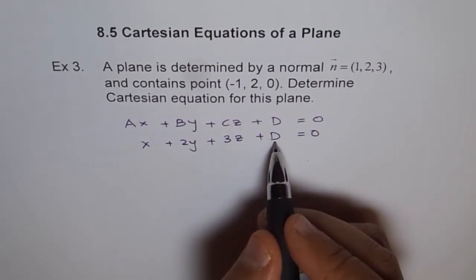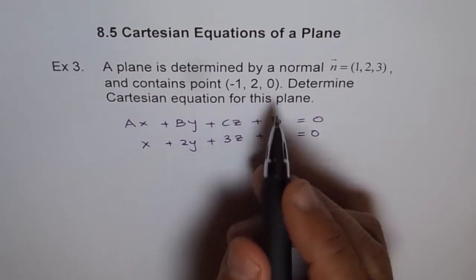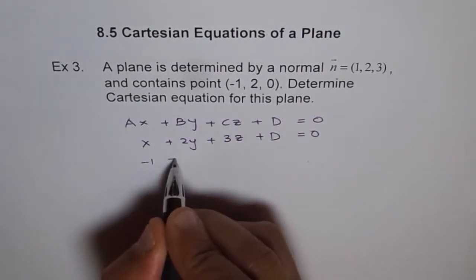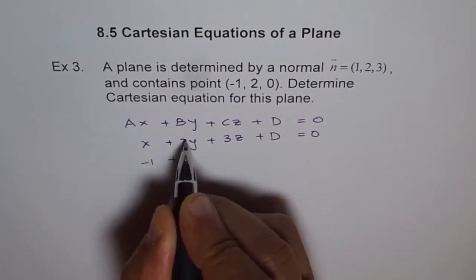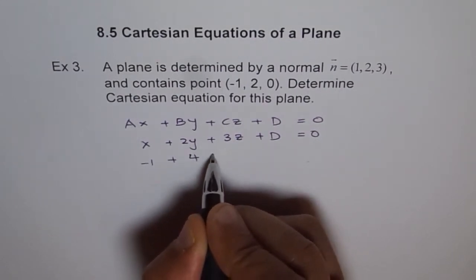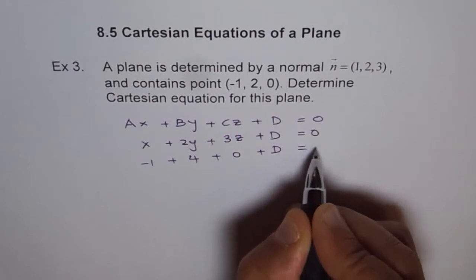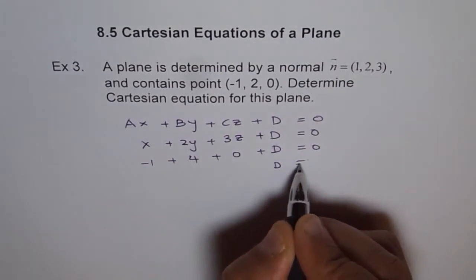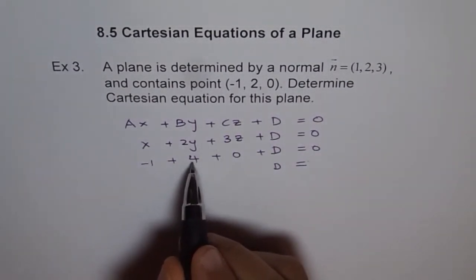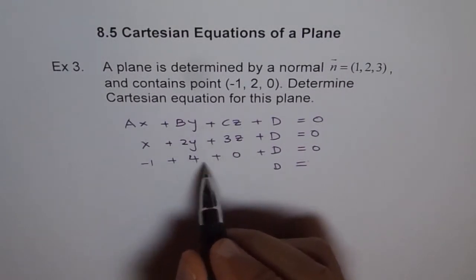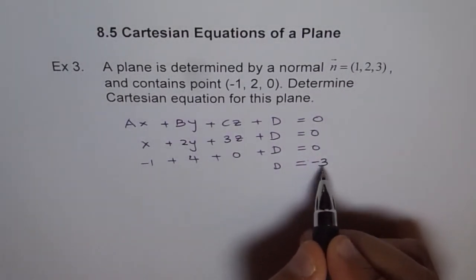To find D, we will use the point (-1, 2, 0). So, -1 plus 2 times 2, which becomes 4, plus 3 times 0 is 0, plus D equals 0. So from here, D equals, -1 plus 4 is 3. We take 3 to this side, it becomes -3.